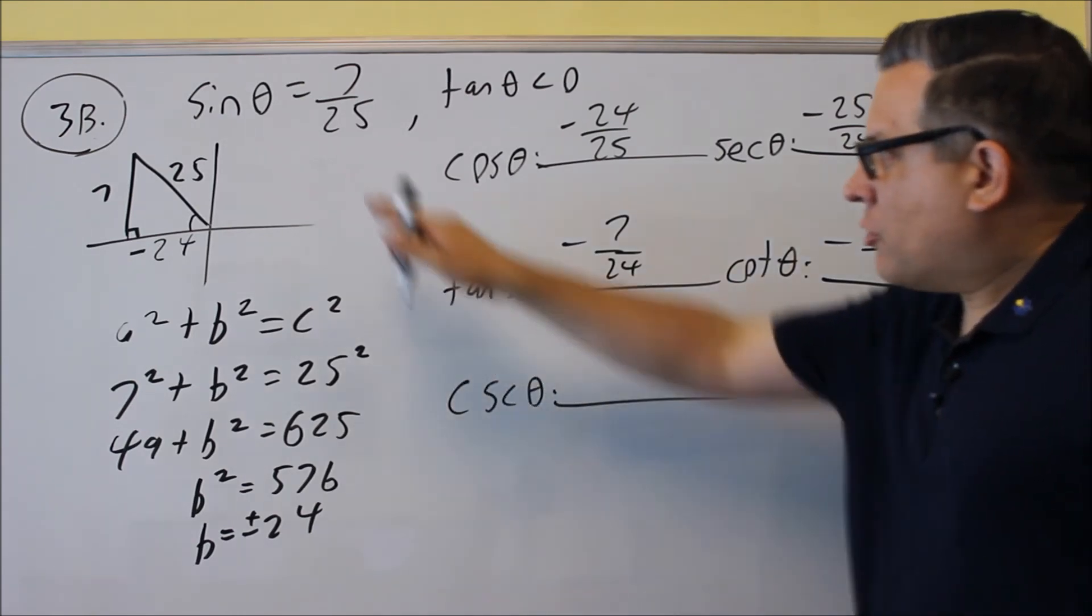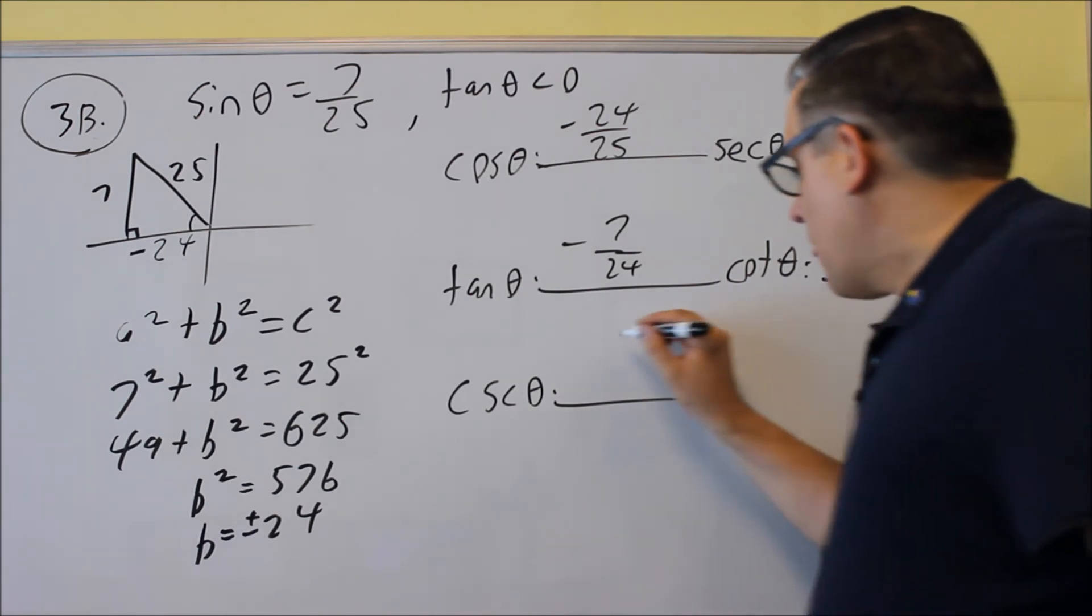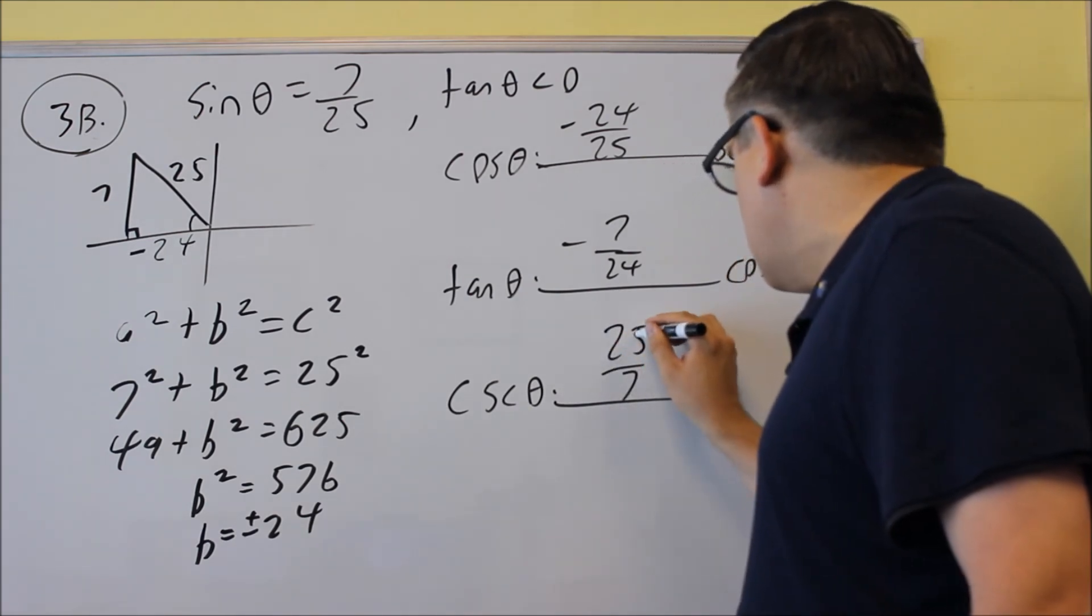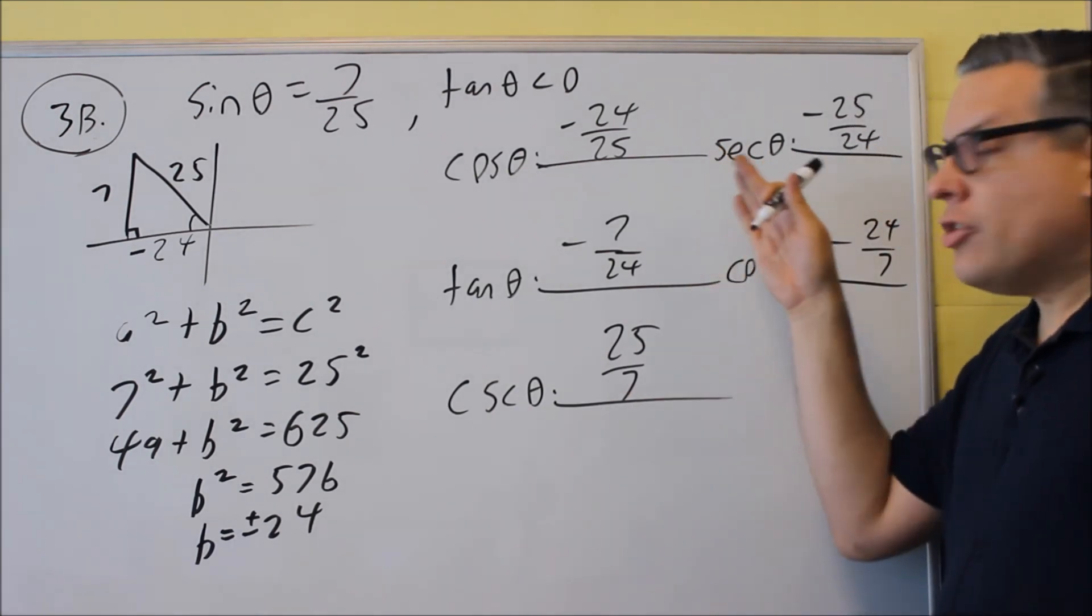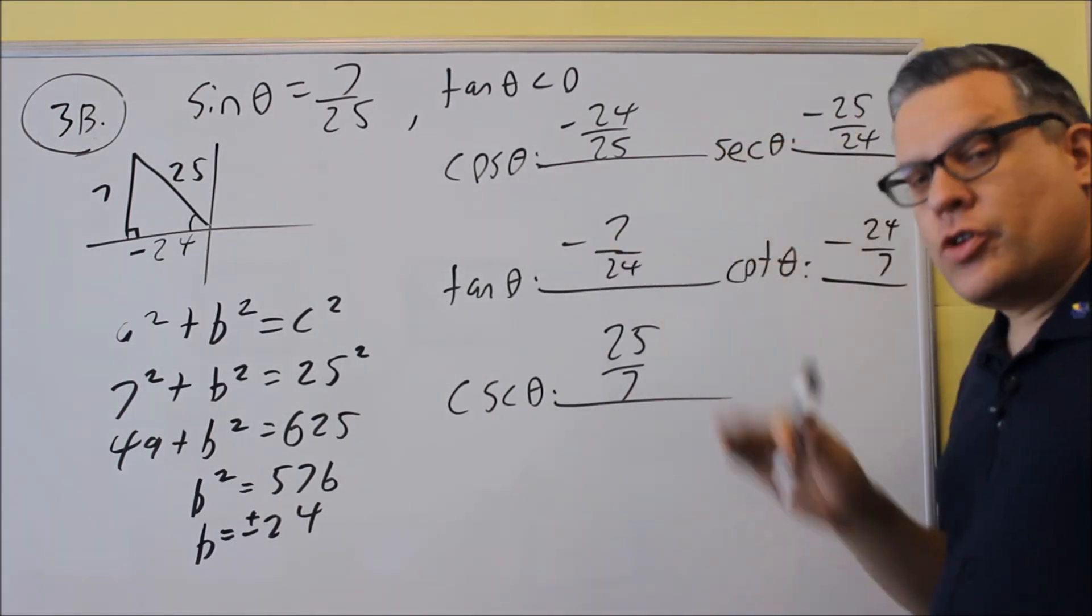Last one is cosecant. That's just going to be the reciprocal of the original one. Twenty-five sevenths is your answer there. So again, if it says find the exact value, you want to make sure you use fractions. Don't use any decimals.